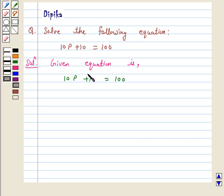So first let's subtract 10 from both sides. Subtract 10 from both the sides of the given equation.